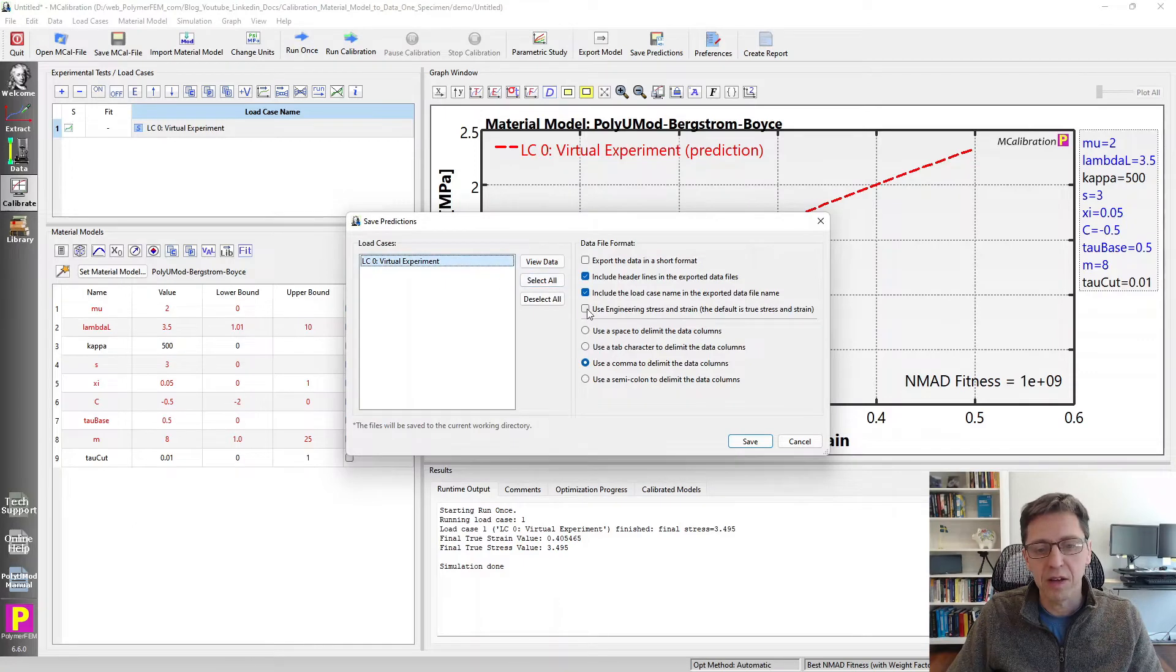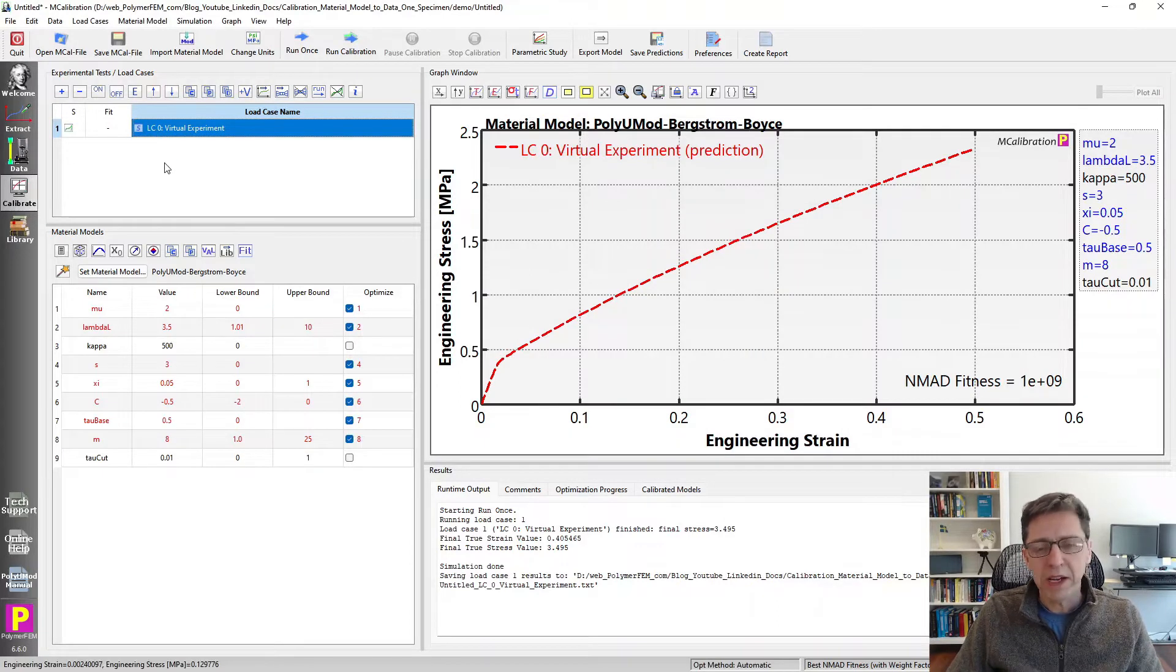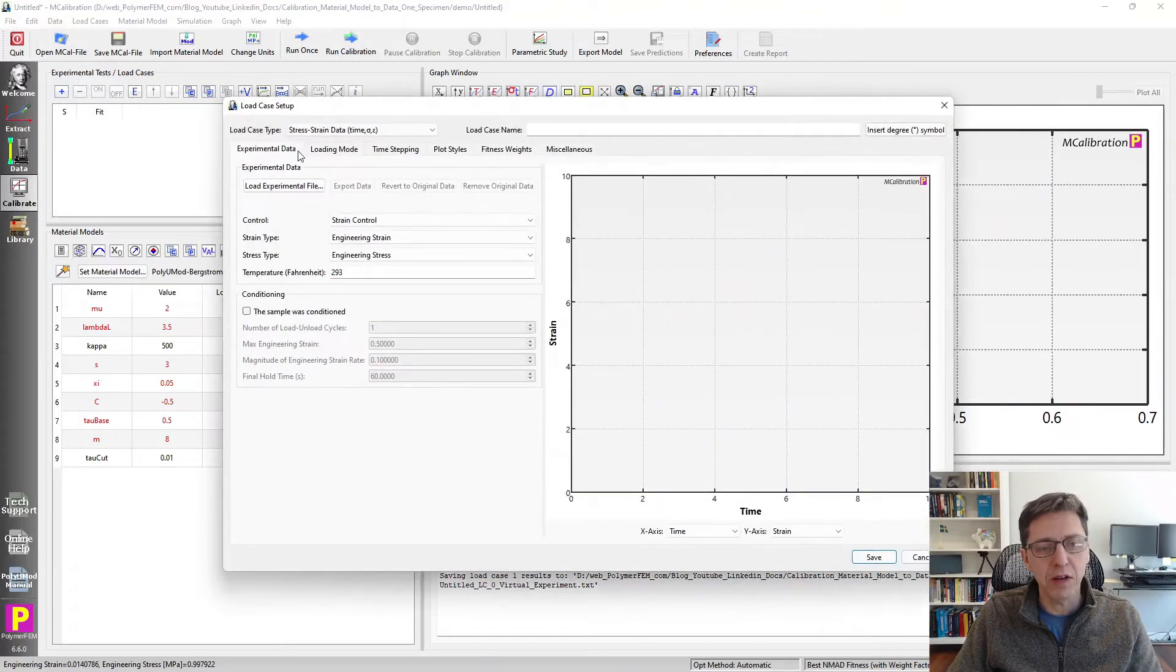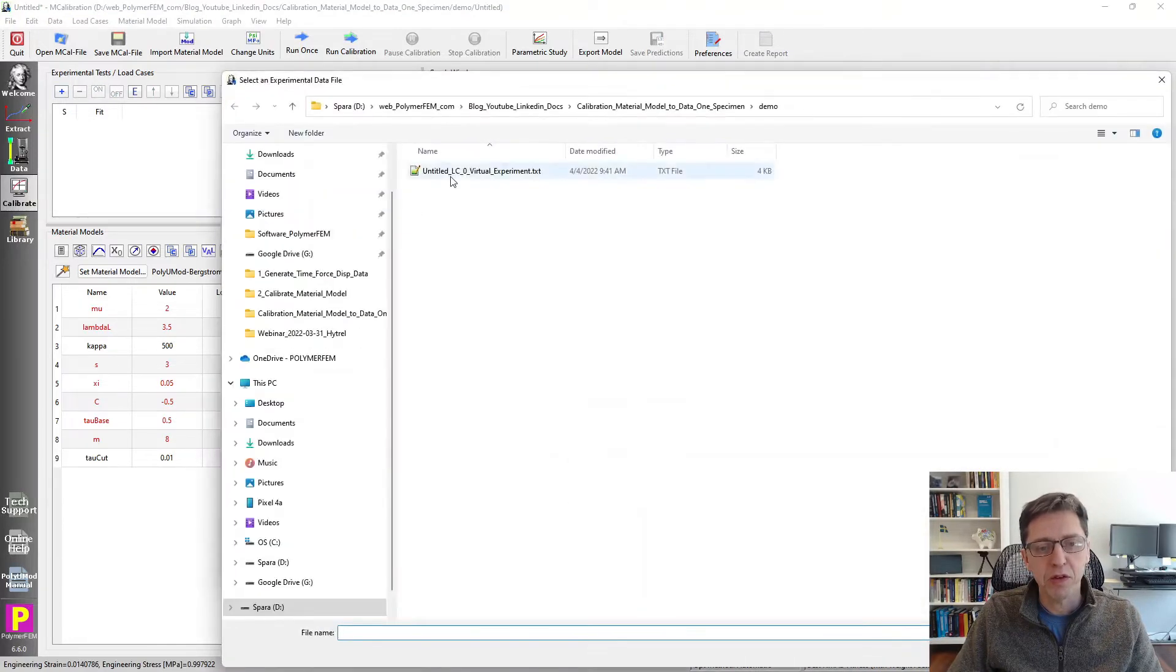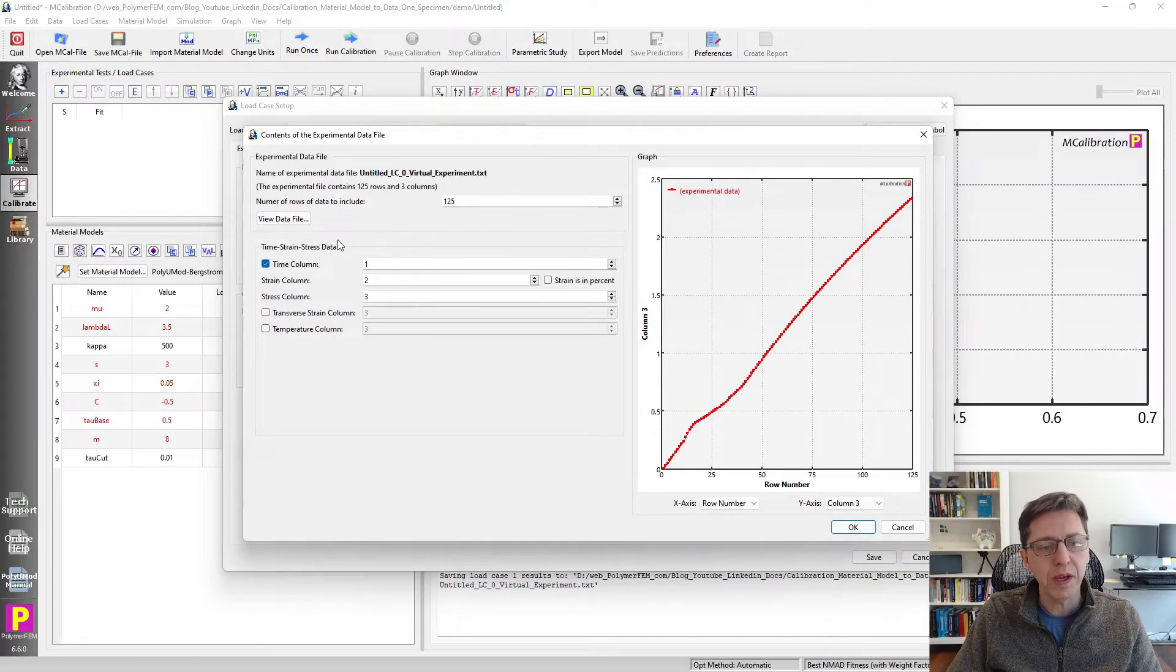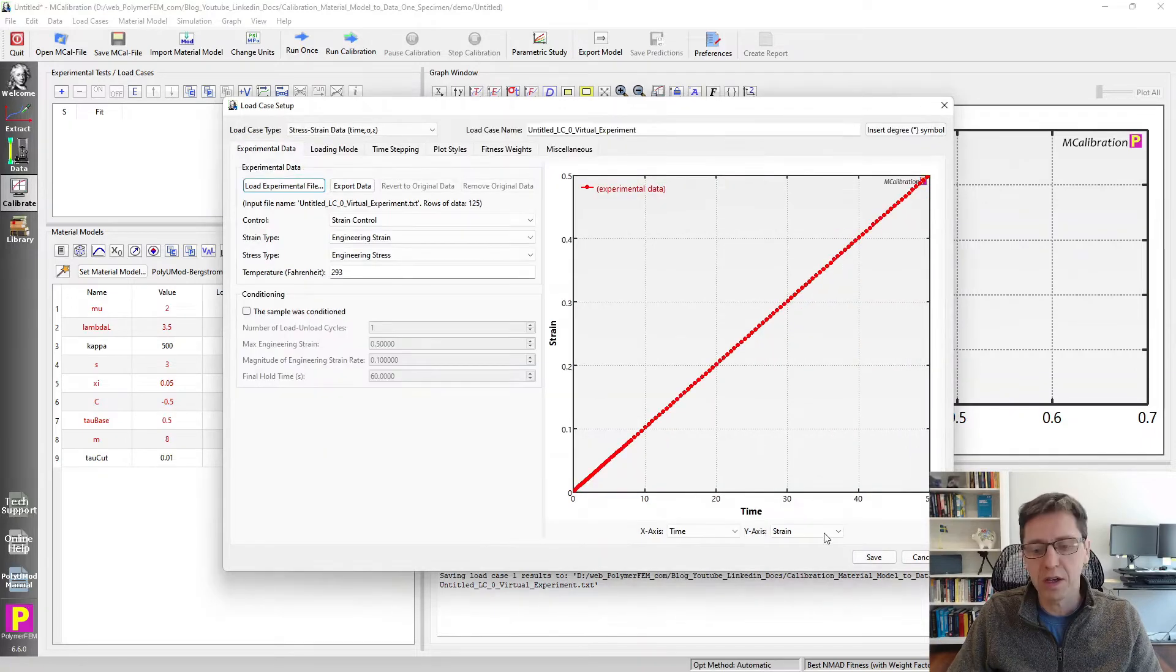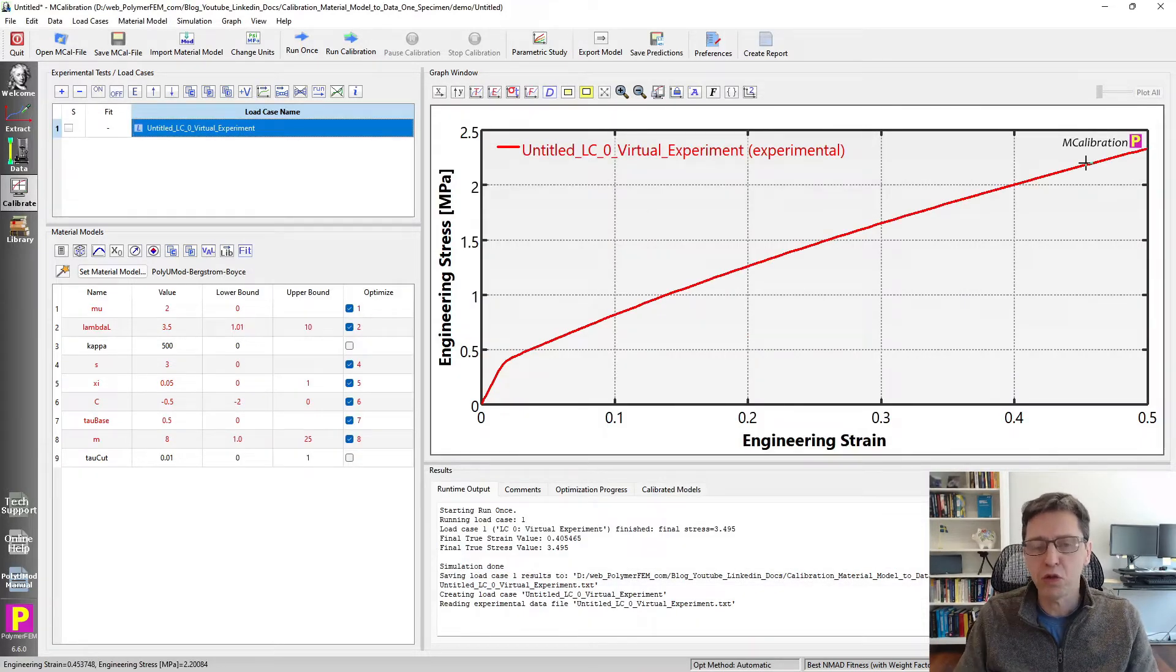I'm going to select engineering stress-strain. I will also export it in short format here, and then I'm going to click on save. Now I can use this as the calibration example by removing this load case that we used for generation. I'm going to read in the new data file that we just generated here. Here is the file, time strain and stress. Here's the data now that I use for calibration. This is the prediction of the stress-strain response in the form of an experimental data file.